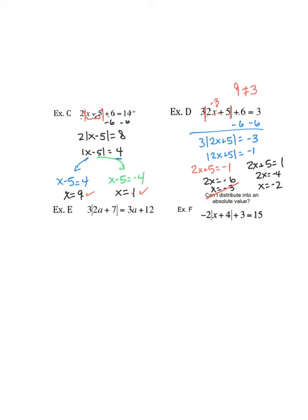The next one, ladies and gentlemen, let's put negative 2 in here. 2 times negative 2 is negative 4. Negative 4 plus 5 is 1. The absolute value is 1. 3 times 1 is 3. 3 plus 6 is 9. 9 equals 3. It doesn't, this is not a solution either.